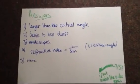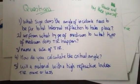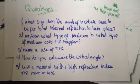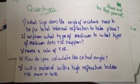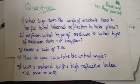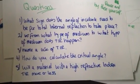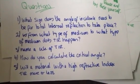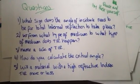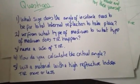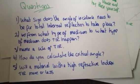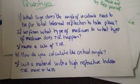Here are your answers. The angle of incidence needs to be larger than the critical angle for total internal reflection to take place. Total internal reflection happens when something goes from a dense to a less dense medium. An endoscope is a use of total internal reflection. The critical angle is calculated by: refractive index equals 1 over sin C. And a material with a high refractive index will totally internally reflect more. I hope you got 5 out of 5 — if you didn't, have a go again.